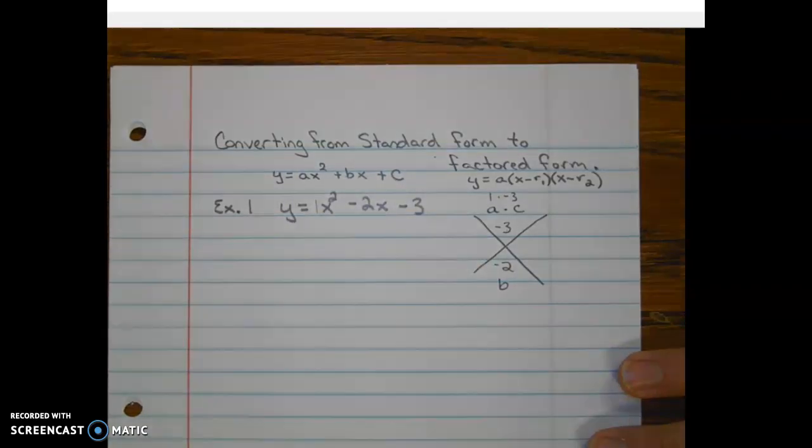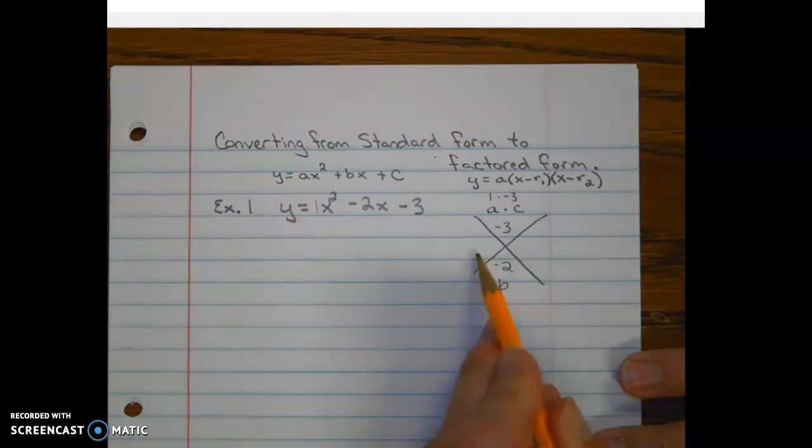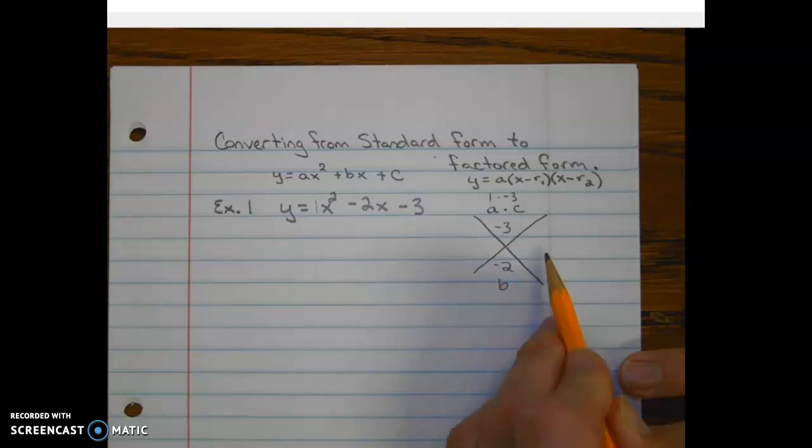All right. So let's take a look now and see how we fill out the two side spots. This is what I like to call the Sudoku part of the problem. The puzzle is we need to find two numbers that multiply to give us negative 3 and they have to add to give us negative 2.